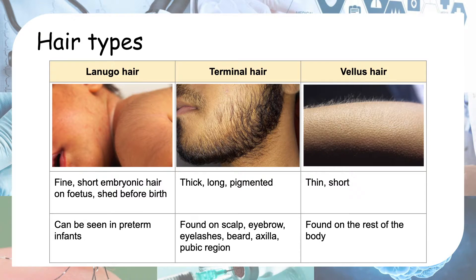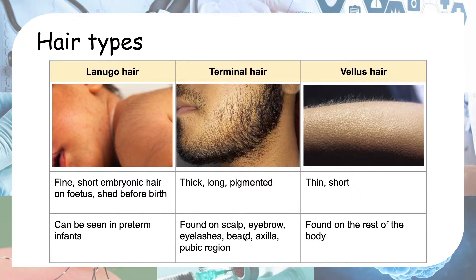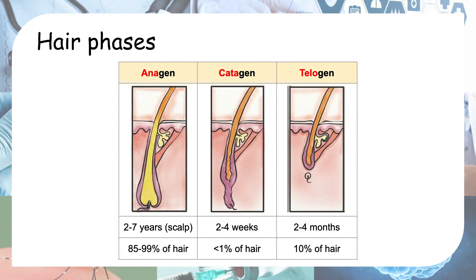Before we look into non-scarring alopecia, it's useful to know the basic physiology of hair. There are three different hair types: lanugo hair is seen in preterm infants, while adults have terminal hair and vellus hair. Terminal hair is thick, long, and pigmented, whereas vellus hair is thin and short. Terminal hair is found on the scalp, eyebrows, eyelashes, beard, axilla, and pubic region; vellus hair is found everywhere else.